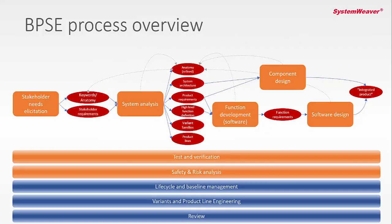Let's take a look at the best practice systems engineering process, which has a number of major steps. We will go through the majority of them in this presentation. These are the core steps: the stakeholder level, the system analysis level, the function development level, the component design and the software design, which in the end are integrated into one product. You go from the starting point at the stakeholder level all the way to a complete product. There are also supporting processes like test and verification, and safety and risk analysis, which are connected to all these levels.